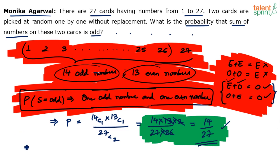If options were given, here's how you could solve it without calculation. There are only two possibilities: the sum is either odd or even, giving roughly a 50/50 chance. If there were 26 cards, the answer would be close to 50/50 with equal odd and even cards. But with 27 cards, there's a slight imbalance.